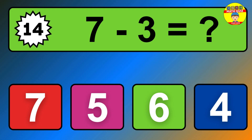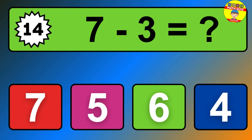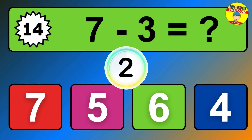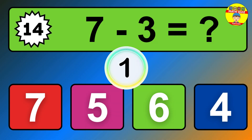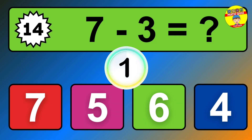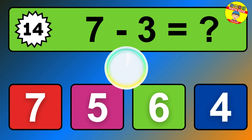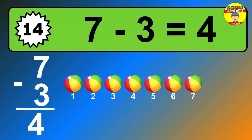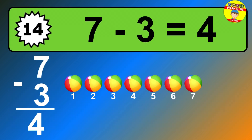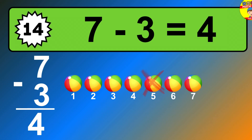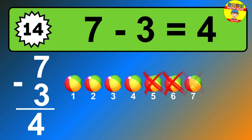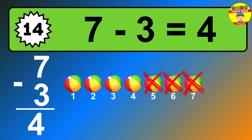Question 14. 7 minus 3 equals what? So the answer is 7 minus 3 is 4. Let's count it. 1, 2, 3, 4.